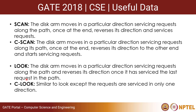For example, with cylinders 0 to 199, requests at 20 and 180, and the head currently at 100 moving toward higher numbers: using SCAN, the head goes to 180, then continues to 199, reverses direction, and comes back to service 20. Using C-SCAN, the head goes to 180, continues to 199, comes back to 0, and then services 20 — it only services requests in one direction.